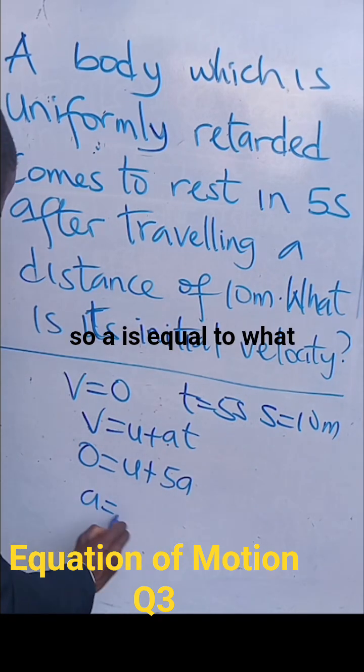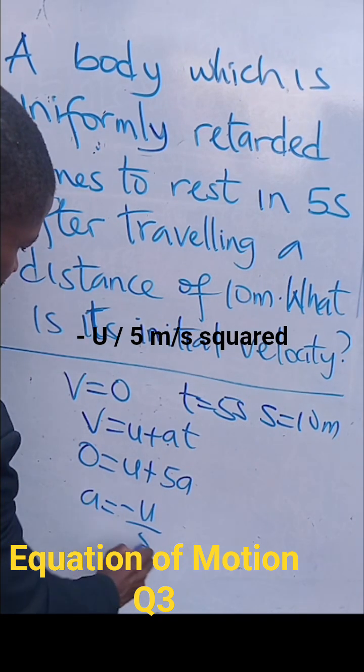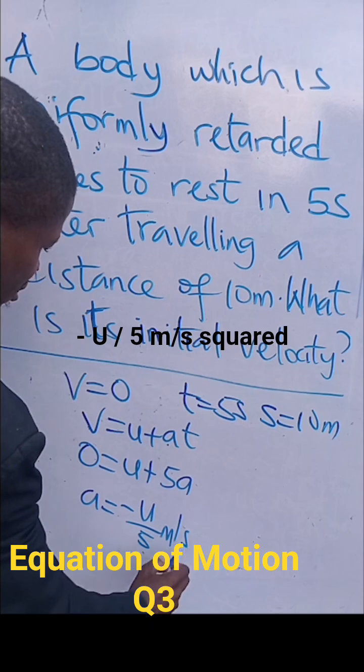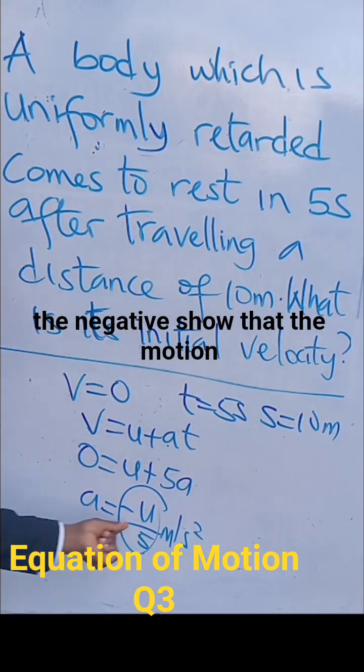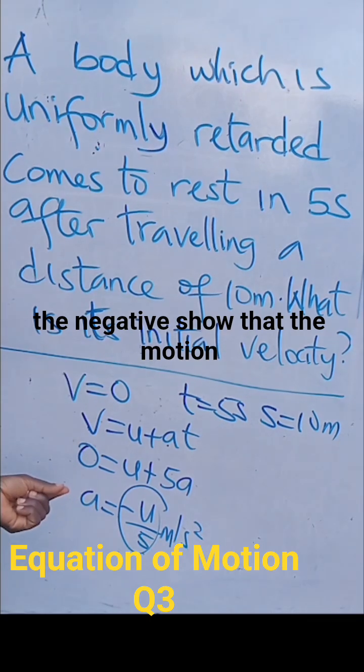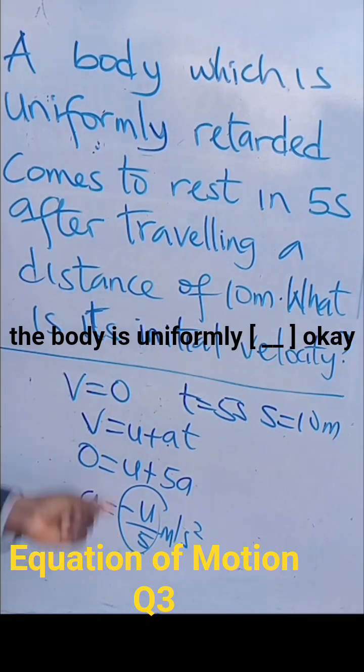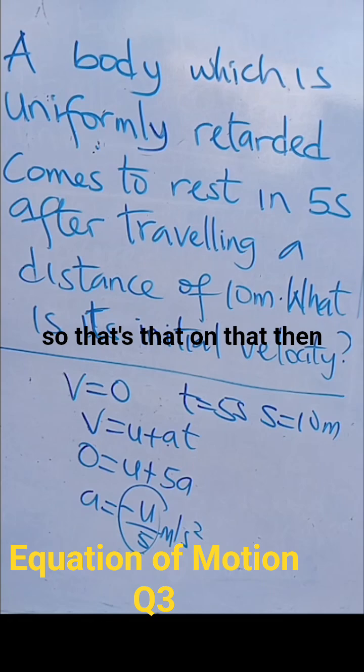So, A is equal to what? Minus U over 5 meter per second squared. That's the acceleration. And the negative shows that the motion, the body, is uniformly retarded. Okay? So, that's that on that.